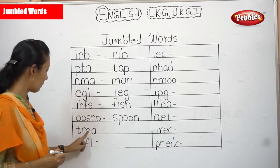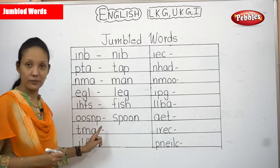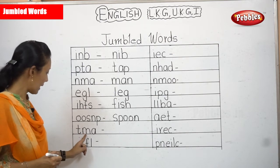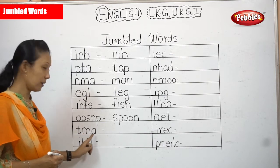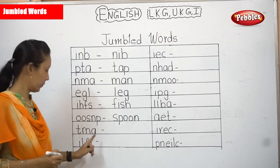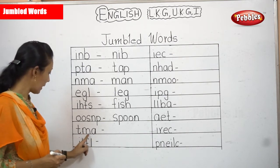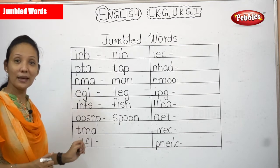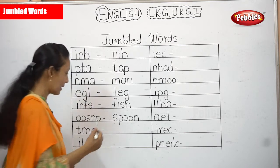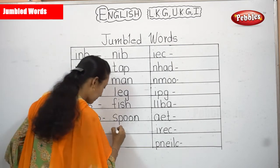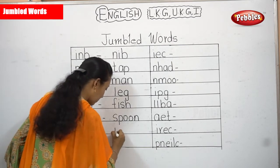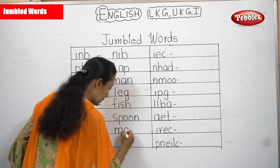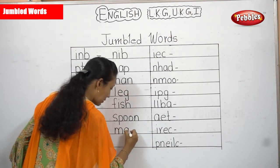Now T, M, A. There is no TMA. What about MAT? Yes, M, A, T — you have the spelling, and the word is MAT.